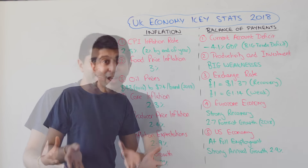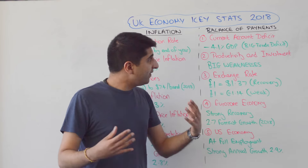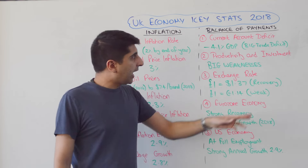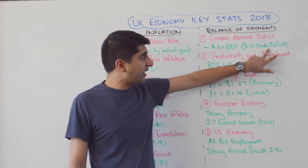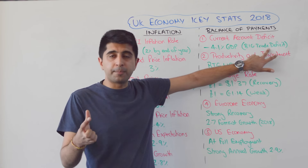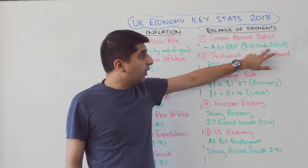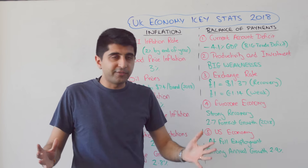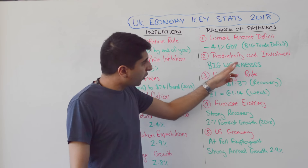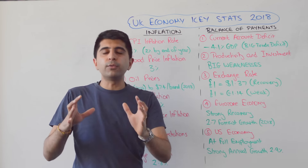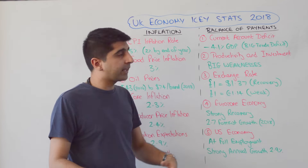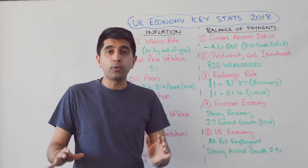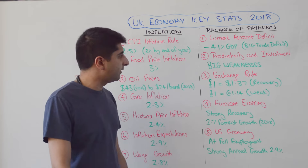Let's now talk about trade and the balance of payments. The current account deficit in the UK is very large at 4.1% of GDP, driven by a huge trade deficit — especially our trading goods balance, which is in a huge deficit. We do have a trading services surplus. The weak pound really hasn't helped much at all yet. Productivity and investment are the big reasons why our trade deficit, and therefore our current account deficit, is so large — both have been very poor ever since the financial crisis.